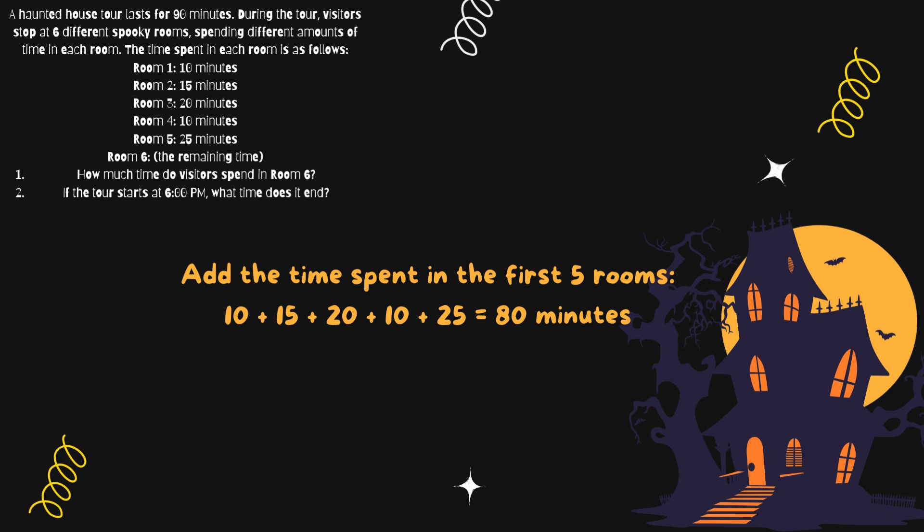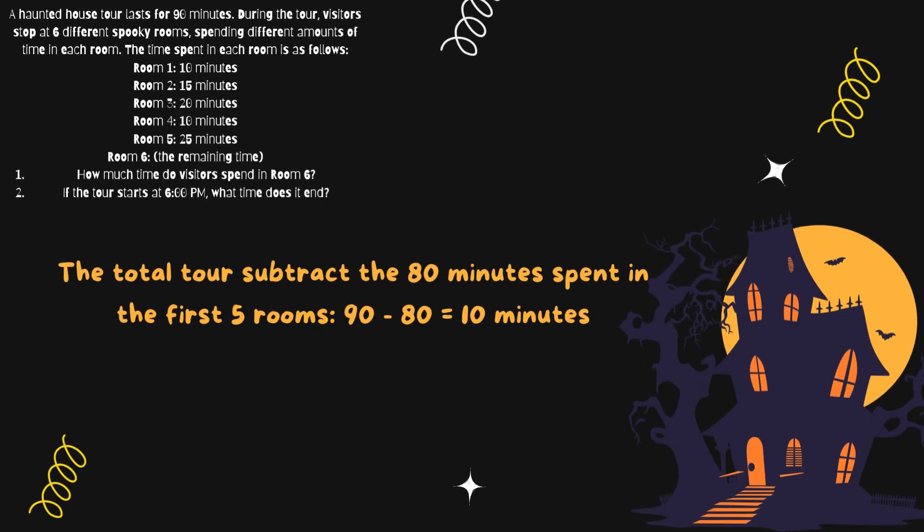10 plus 15 plus 20 plus 10 plus 25 equals 18 minutes. Find the time for room 6. The total tour is 19 minutes. Subtract — we subtract 18 minutes spent in the first five rooms. 19 minus 18 equals 10 minutes. So you spend 10 minutes in room 6.